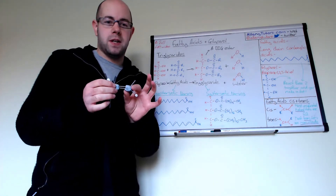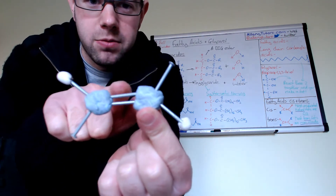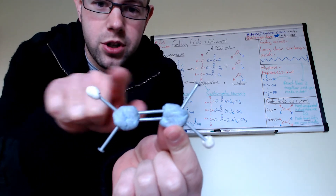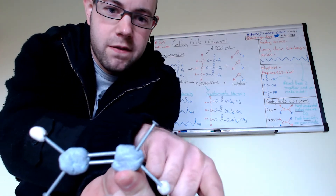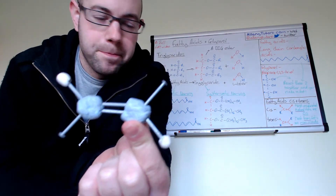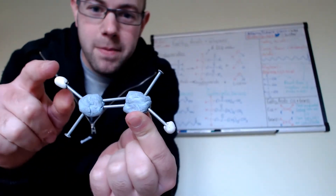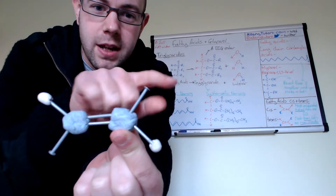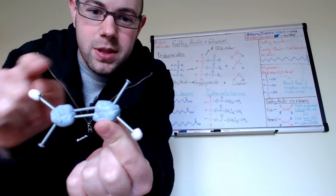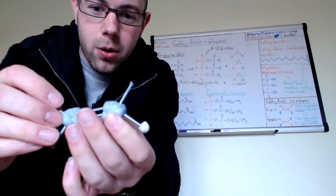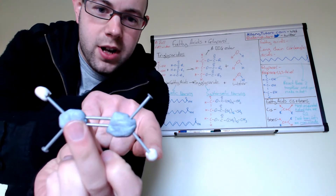A geometric isomer is where you have fixed positions of different groups. So looking at our model here, we have a double bond in the middle and two R groups on this side. These can extend further along and make a big long fatty acid. This would be in the trans formation, which you could also name as E.